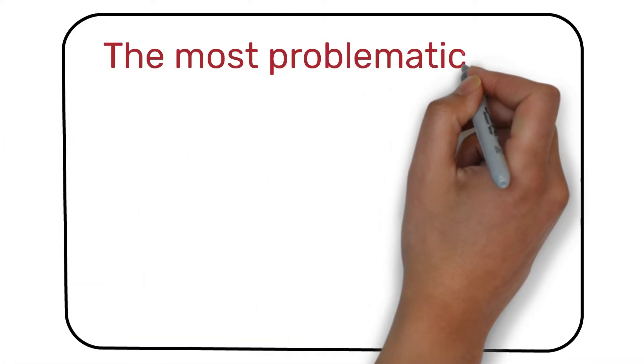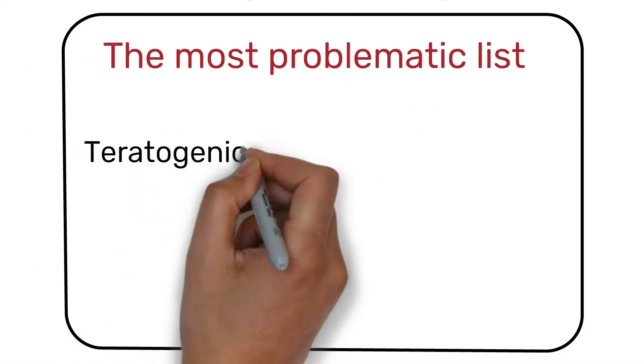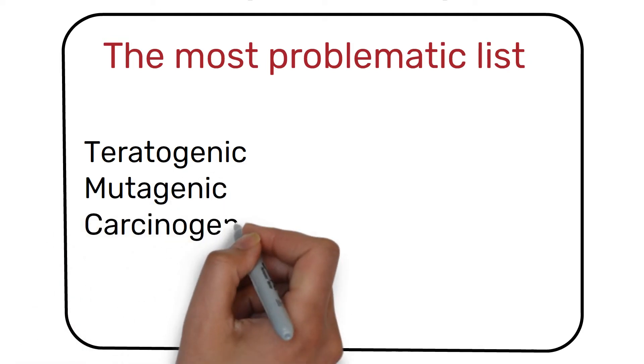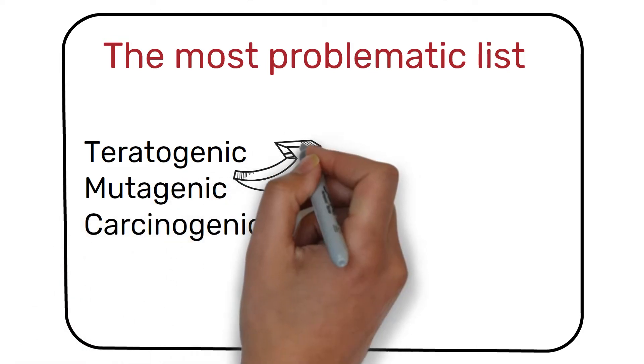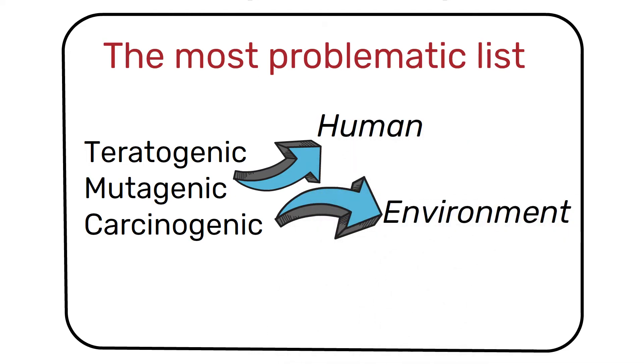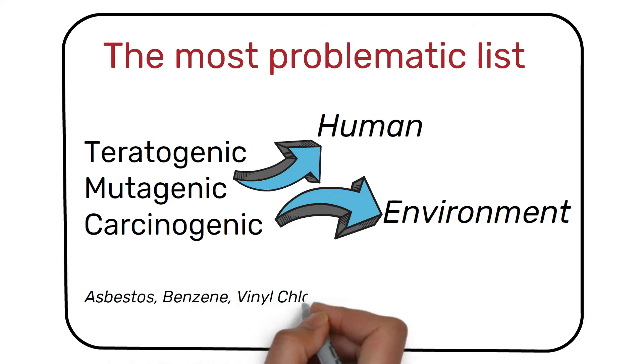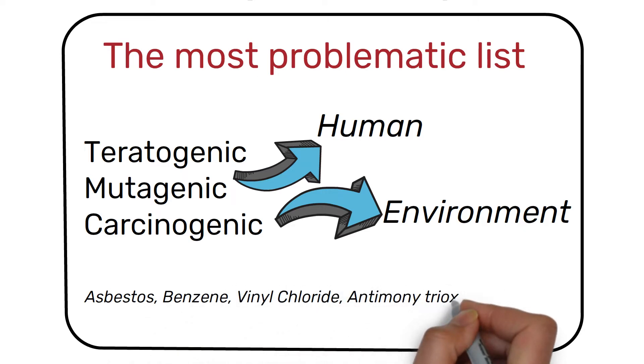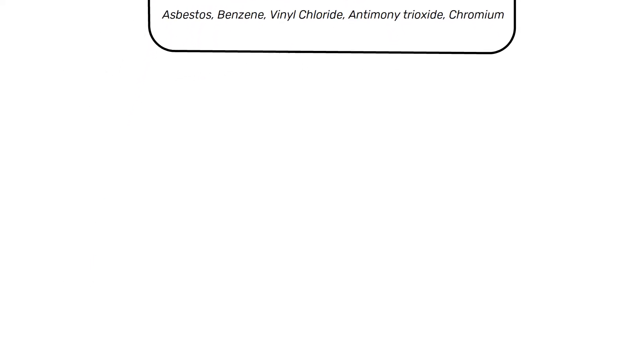The X list: This is the list of the most problematic ones. Those are teratogenic, mutagenic, carcinogenic, or harmful in direct and indirect ways to humans and the environment. Some example materials are asbestos, benzene, vinyl chloride, antimony trioxide, and chromium. Substances placed on the X list are considered the highest priorities for complete phase-out and if necessary and possible, replacement.